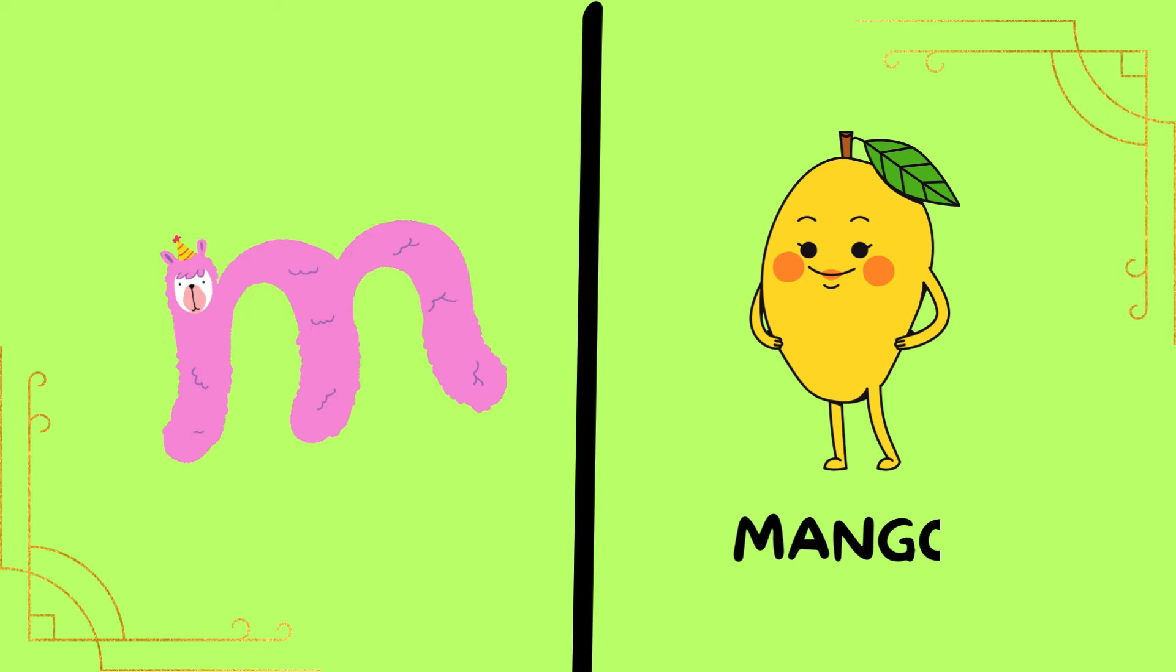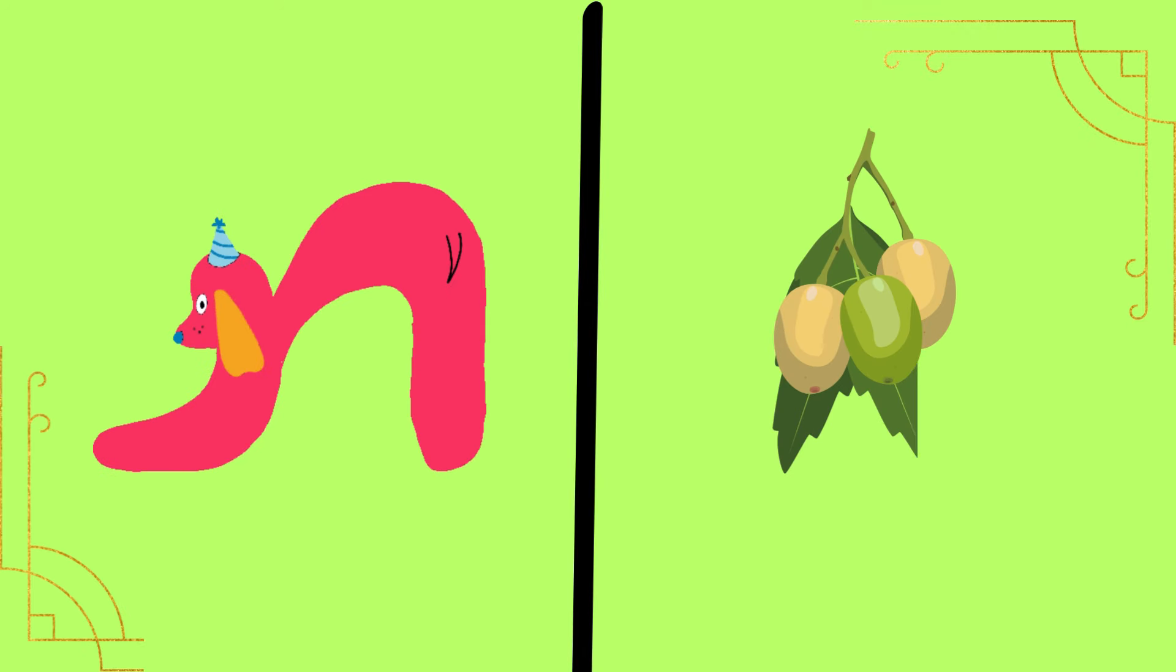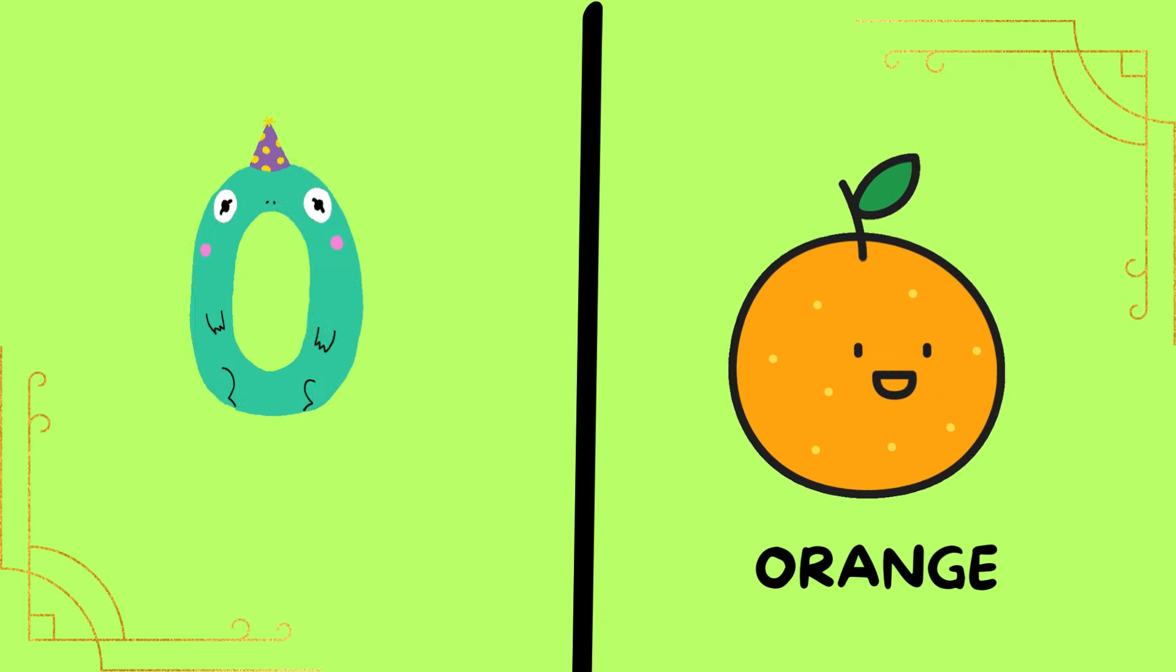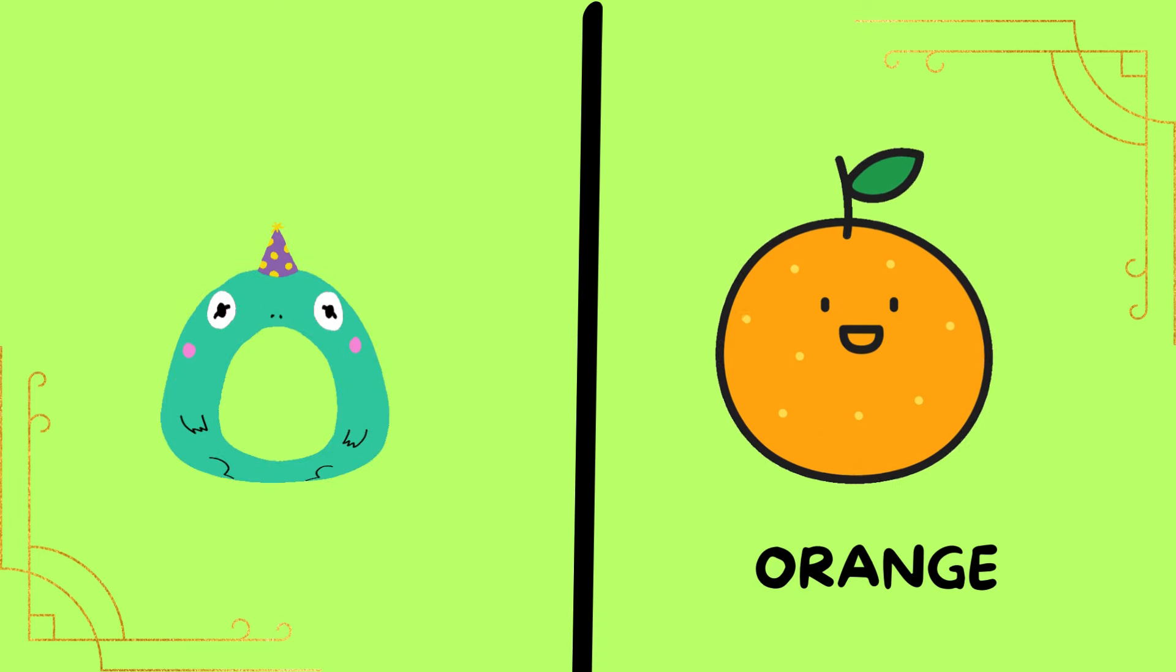M is for mango. M is for mango. N is for neem fruit. N is for neem fruit. O is for orange. O is for orange.